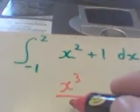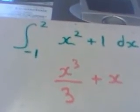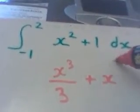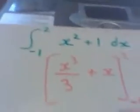And here's a slightly trickier version. So we're going to integrate, so that's x cubed over 3 plus x, integrated between 2 and negative 1.